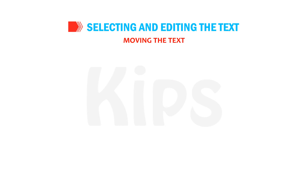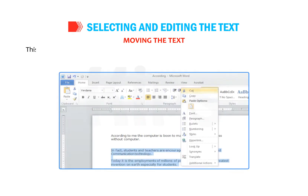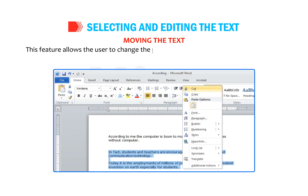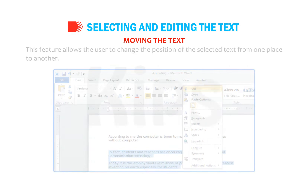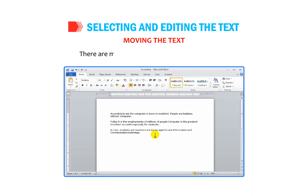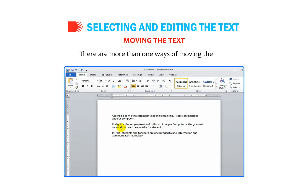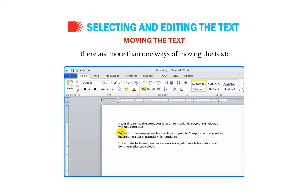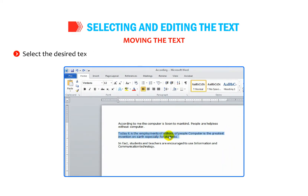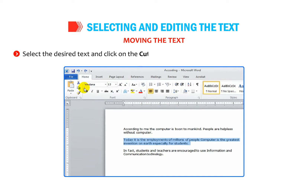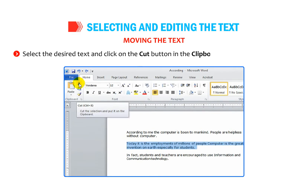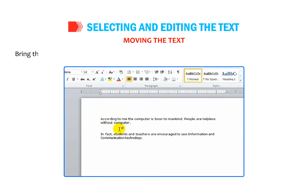Now let us learn how to move text. This feature allows the user to change the position of selected text from one place to another. There are more than one way of moving text. Select the desired text and click on the Cut button in the Clipboard group on the Home tab, then bring the pointer to the desired location and click on the Paste button.